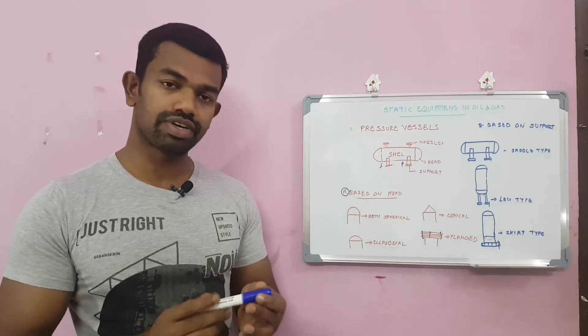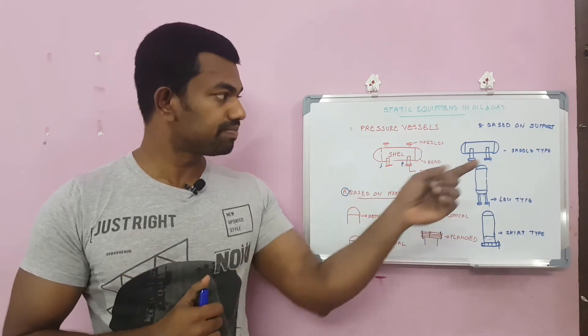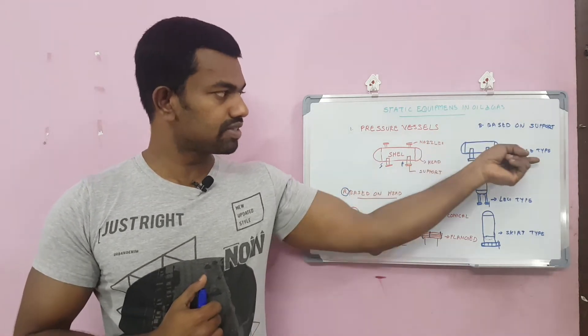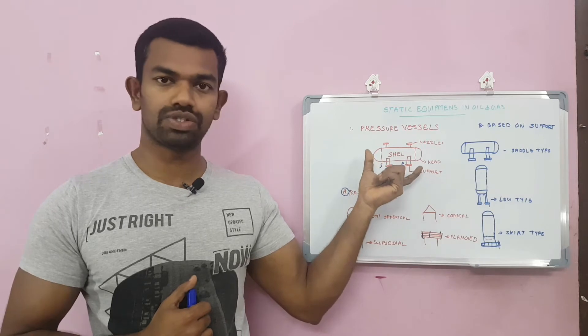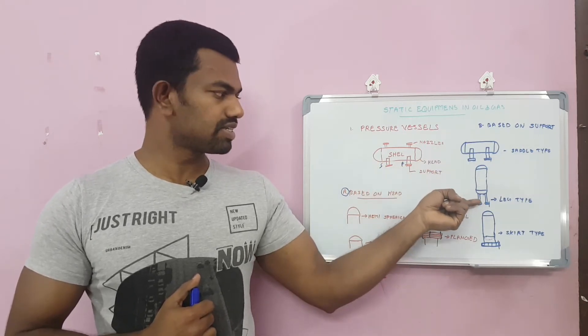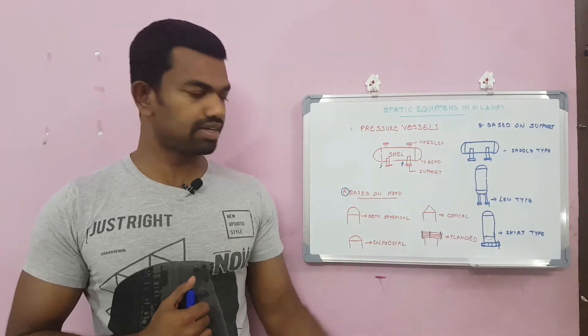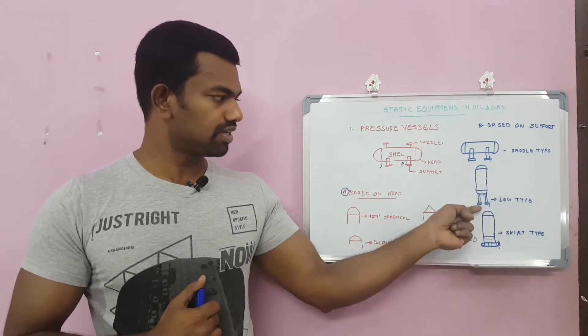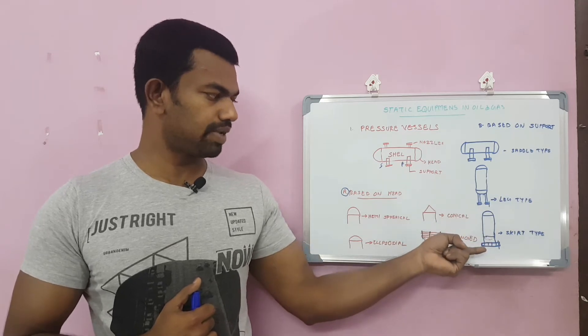Now we can see based on the support. First one is saddle type, the same which we have shown here. Two saddles will be here for supporting. Next one is leg type. This will be usually the vertical type, leg type.